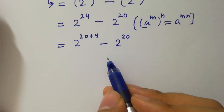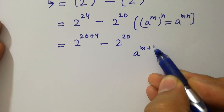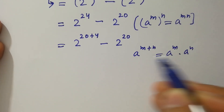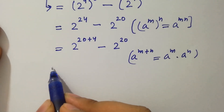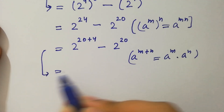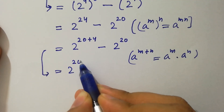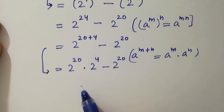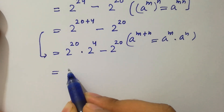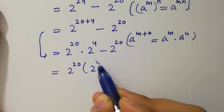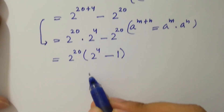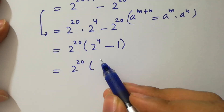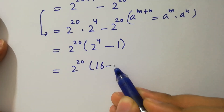This is the same as 2 to the power 20 plus 4, minus 2 to the power 20. Since a to the power m plus n equals a to the power m times a to the power n, it becomes 2 to the power 20 times 2 to the power 4, minus 2 to the power 20. Taking 2 to the power 20 as common, we have 2 to the power 20 times (2 to the power 4 minus 1).